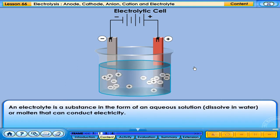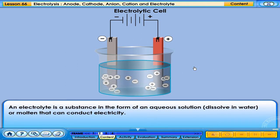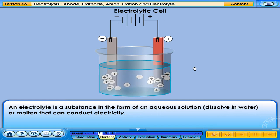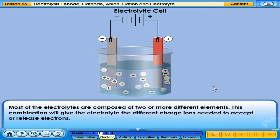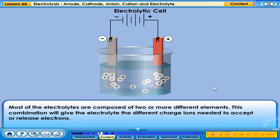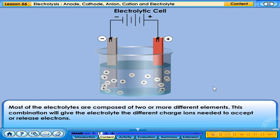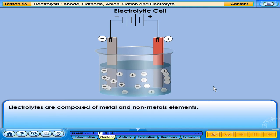An electrolyte is a substance in the form of an aqueous solution dissolved in water, or molten, that can conduct electricity. Most electrolytes are composed of two or more different elements. This combination gives the electrolyte the different charged ions needed to accept or release electrons. Electrolytes are composed of metal and non-metal elements.